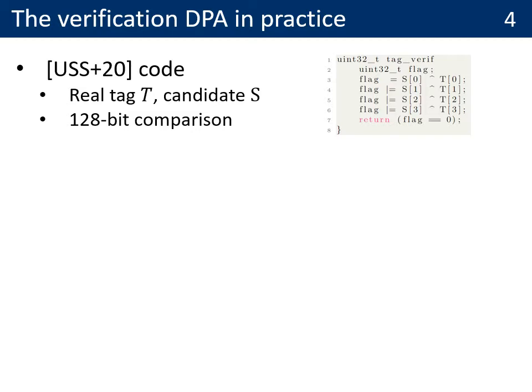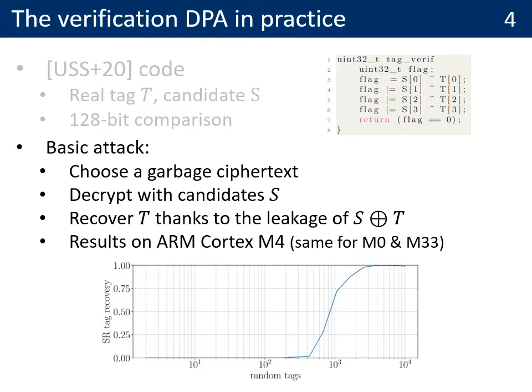Let us now look at how the verification DPA works in practice. On the right, I pasted a piece of code describing a 128-bit comparison from the Retrofitting paper — mostly 32-bit XORs between the real tag T and the candidate tag S. The basic attack the adversary can perform is to choose a garbage ciphertext, ask to decrypt it with many different tag candidates S, and then recover the tag T thanks to the leakage of S XOR T. The results on an ARM Cortex-M4 show that we can recover the tag with confidence with approximately 1000 traces, with very similar results on the Cortex-M0 and M33.